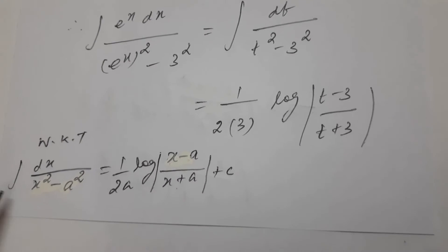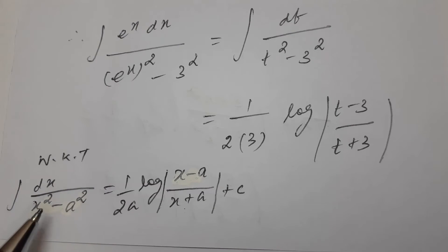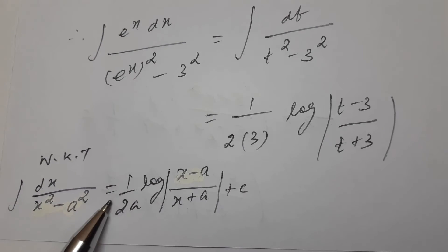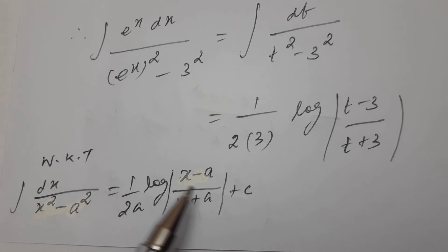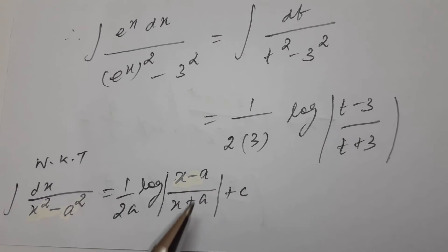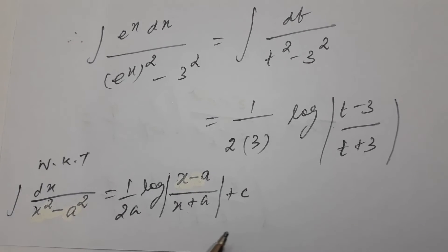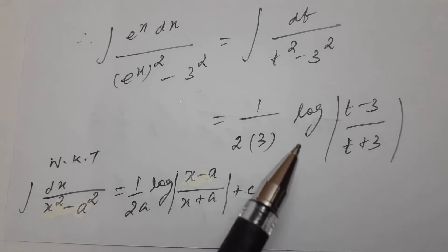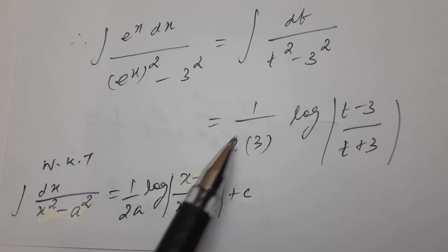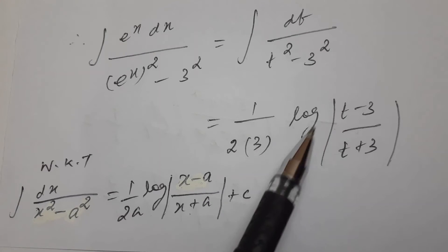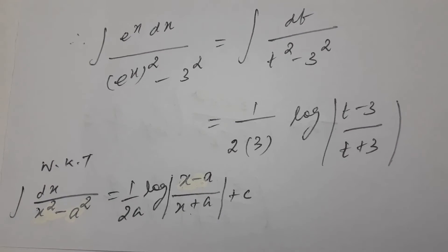We know that integration of dx divided by x square minus a square is equal to 1 by 2a log of x minus a divided by x plus a, plus c. Here x is equal to t, so it becomes 1 by 2 into 3, log of t minus 3 divided by t plus 3.